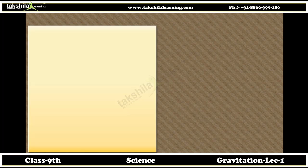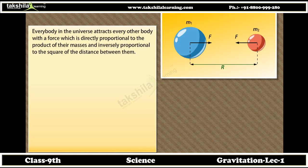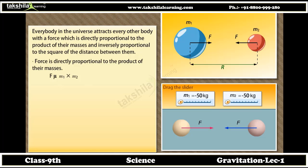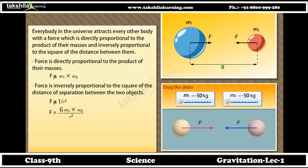Universal law of gravitation: every body in the universe attracts every other body with a force which is directly proportional to the product of their masses and inversely proportional to the square of the distance between them. Force is directly proportional to the product of their masses, and force is inversely proportional to the square of the distance of separation between the two objects.